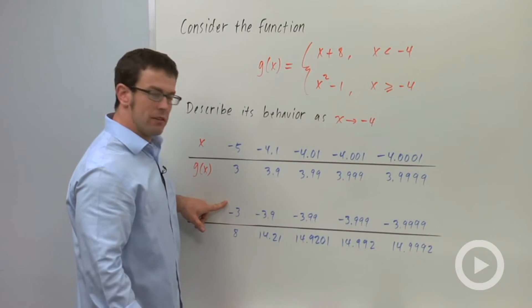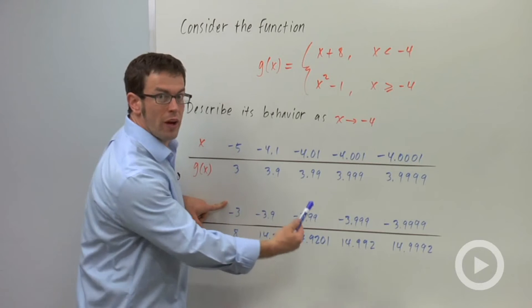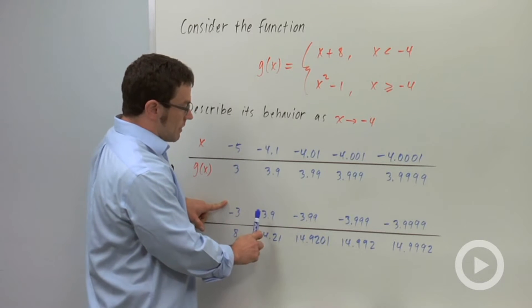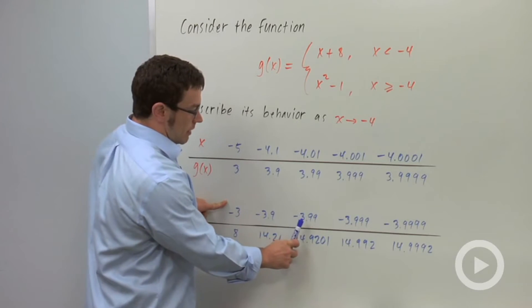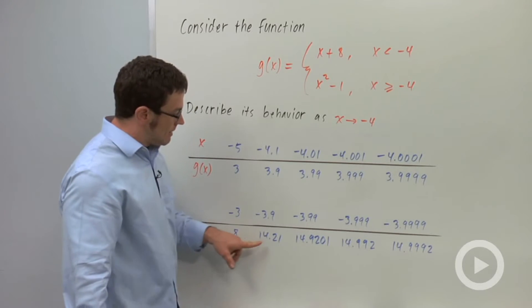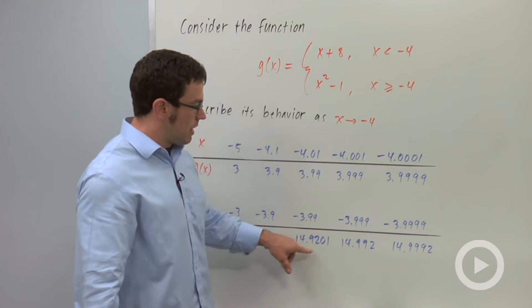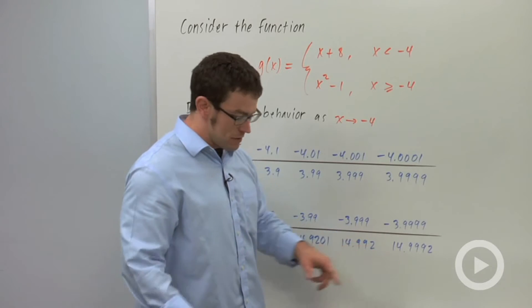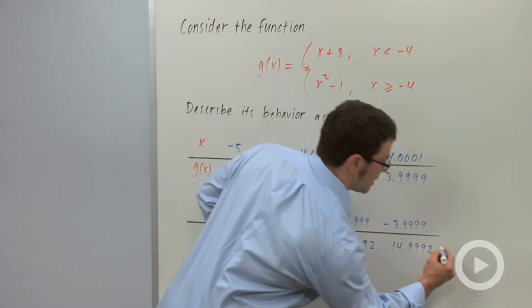Now, if we start from the right, negative 3 is to the right of negative 4, and I go to the left. I get negative 3, negative 3.9, negative 3.99. These are the values I get: 8, 14.2, 14.9, and you can see that these values seem to be getting closer and closer to 15.